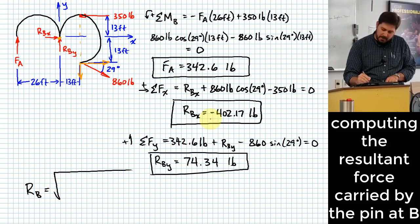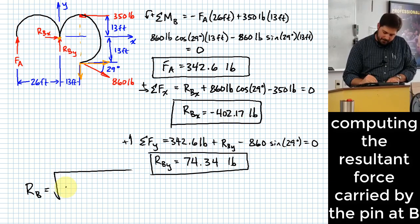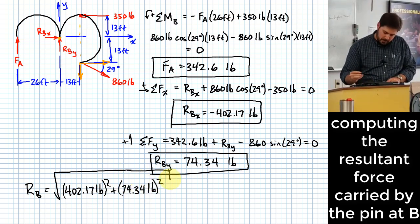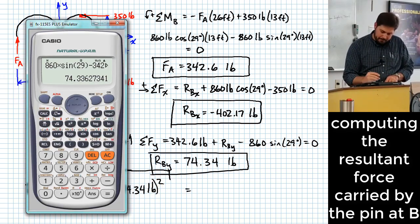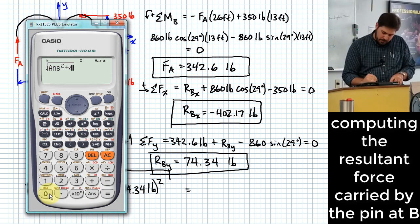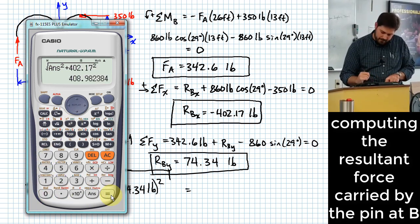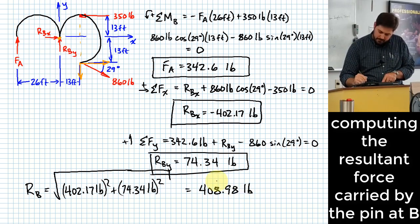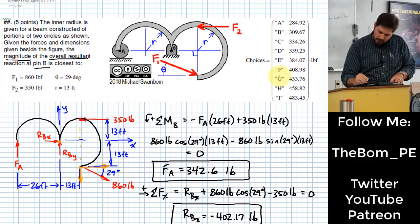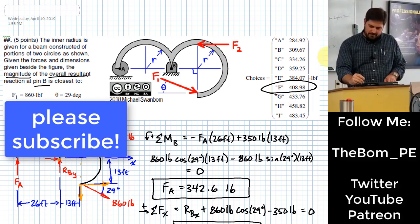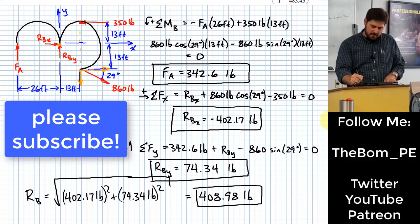You take the square root of the sum of the squares of these magnitudes, RBX and RBY. And when we do that, we should end up with the correct answer. So we'll take the square root, by the way you can use this answer key, it's really nice. And we can then put in 402.17 squared. So that ends up giving us 408.98 pounds. And hopefully that's one of the choices. Any questions?